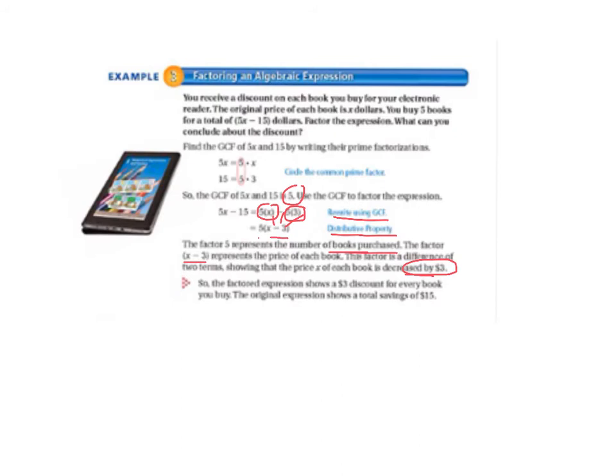So, the factored equation shows a 3 dollar discount for every book you buy. The original expression shows a total savings of 15 dollars.